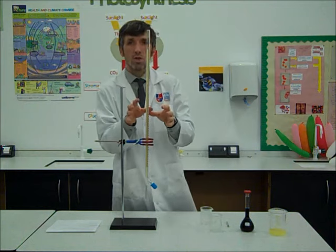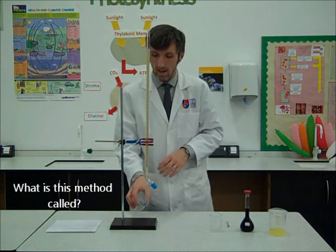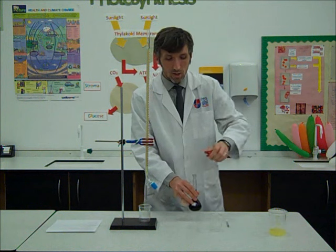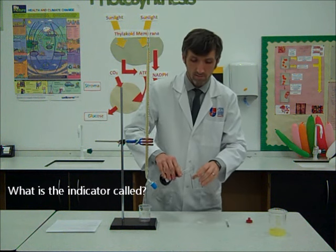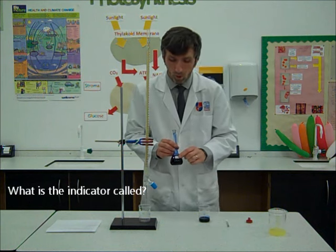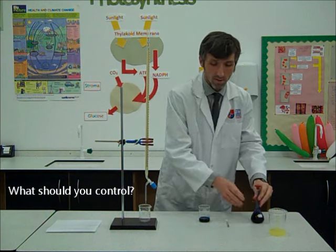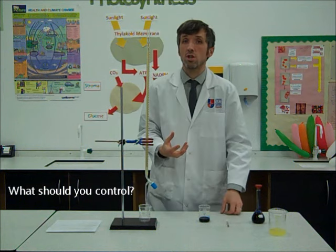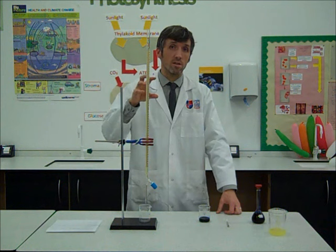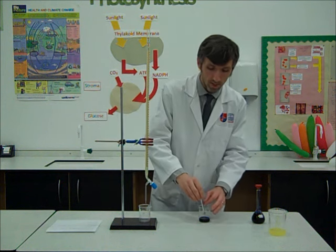We're going to titrate the juice into DC-PIP, which is going to be our indicator of the amount of vitamin C we've added. In order to make sure this is valid, we're going to use the same concentration of DC-PIP. This is 0.1% DC-PIP solution, and we're going to use the same volume, because obviously if we change the concentration or we change the volume of DC-PIP, then we'll have to change the amount of vitamin C that we add, and so the results will not be reliable.